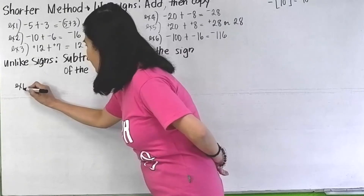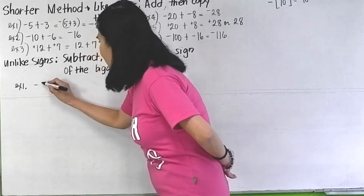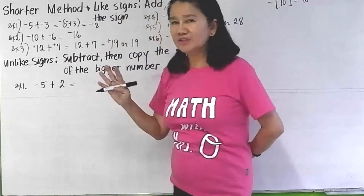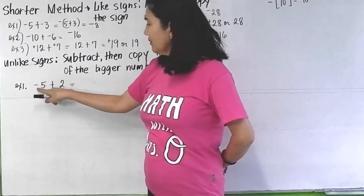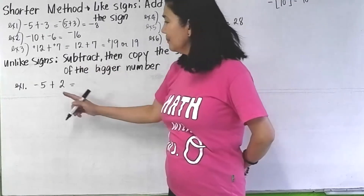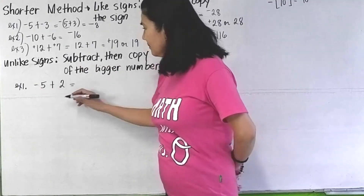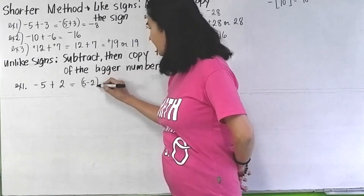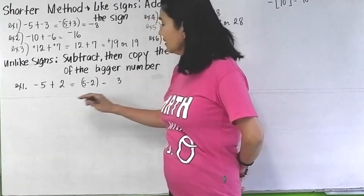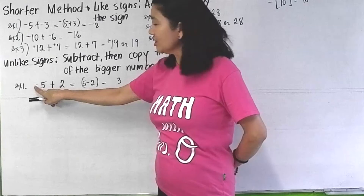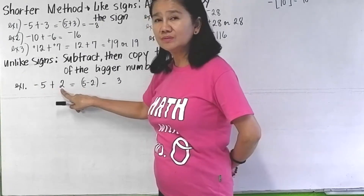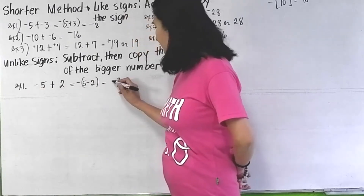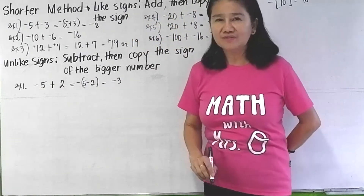Example 1: negative 5 plus 2. We have unlike signs. Subtract: 5 minus 2 is 3. Copy the sign of the bigger — which is bigger, 5 or 2? 5. What's the sign of 5? Negative. So you put negative there, and your answer is negative 3.